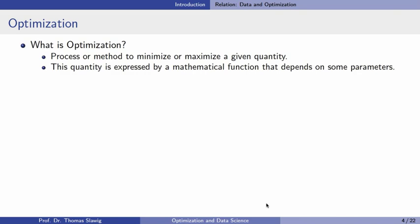I will start with the relation between data and optimization, and I will start with the term 'optimization'. I always use four questions to describe such a new topic. The first question: what is it? How can it be summarized? Optimization can be described as a process or a method to minimize or maximize a given quantity.